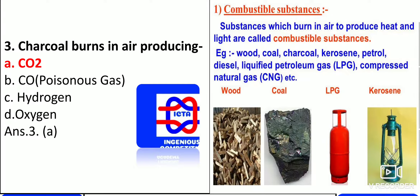Charcoal burns in air producing carbon dioxide. After burning the charcoal, what exactly it produces? It produces carbon dioxide, not carbon monoxide. Carbon monoxide is also known as poisonous gas. Please remember: carbon monoxide is the poisonous gas.